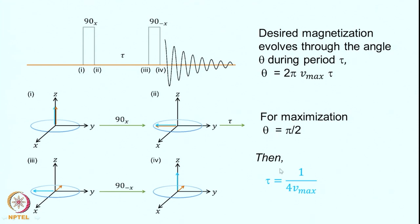Now apply the 90 minus x pulse. This magnetization, which is along the minus x-axis, does not rotate — it stays there. But the water magnetization, which was still along the minus y-axis, now rotates back to the z-axis. So the water magnetization has come back to the z-axis, and the desired magnetization has remained in the transverse plane. If you detect the signal now, you get signals from the desired magnetization only. This is called the jump and return technique — one way of suppressing the solvent signal and detecting the signals of interest.